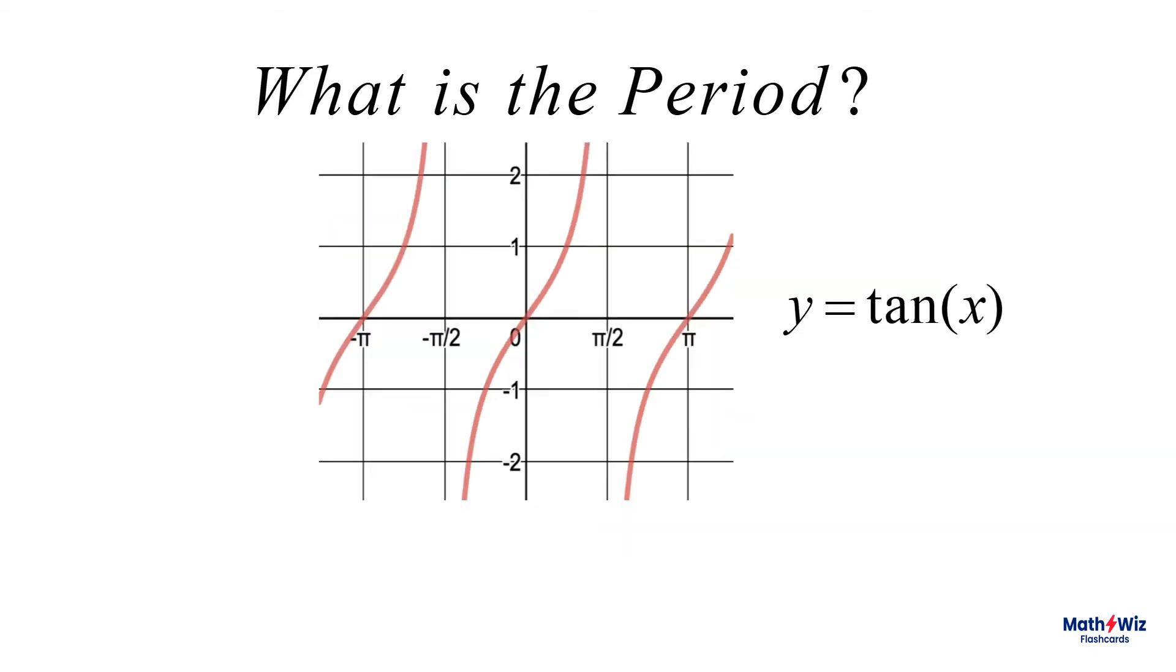Our second graph, again from trigonometry, y equals tangent x. The width of one cycle, here, is pi. The period of y equals tangent x is pi.